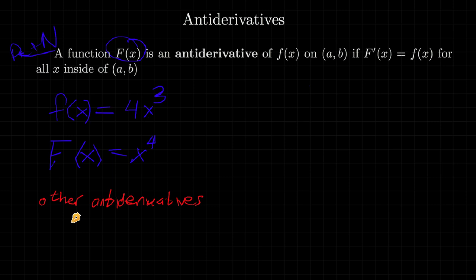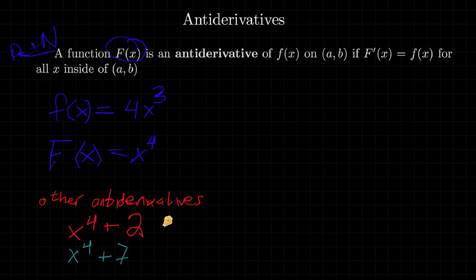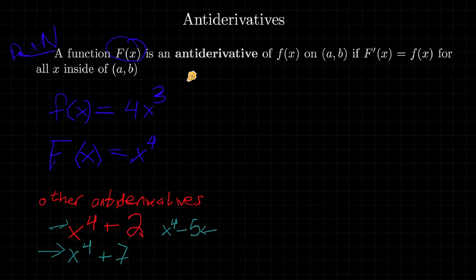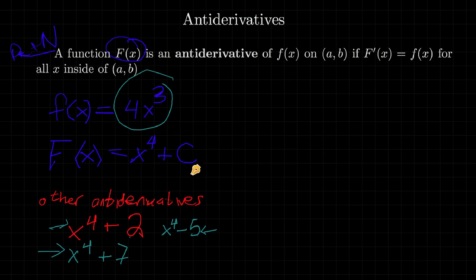For example, x⁴ + 2 is one antiderivative. Another is x⁴ + 7, or x⁴ – 5, because every time you take the derivative of any one of these functions, the derivative of the constant part is always zero, so you always get back to 4x³. So we say the general antiderivative of 4x³ is x⁴ + C, where C is any constant.